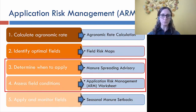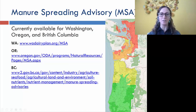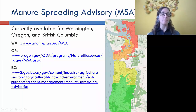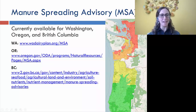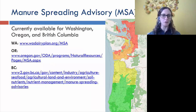The manure spreading advisory started in just our segment of Whatcom County, then we expanded it to all of western Washington, given the very similar climate of seasonal rainfall and dry summers. Then Oregon asked us to bring it south, and British Columbia asked us to revise it for their area. So you'll see it available for these three regions, with links accessible on the recorded version of this presentation.